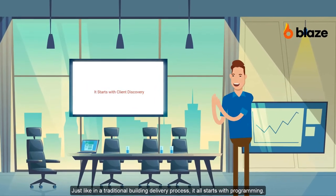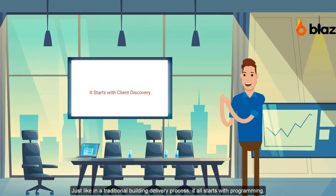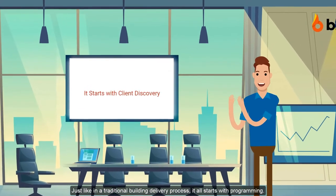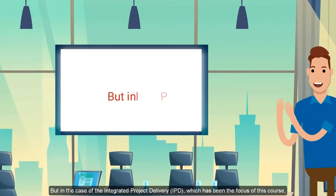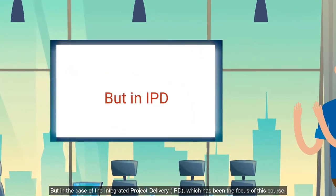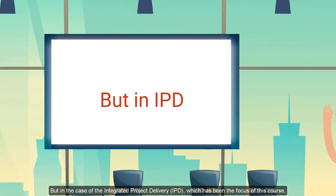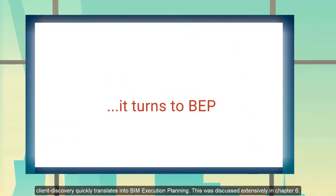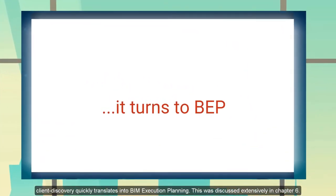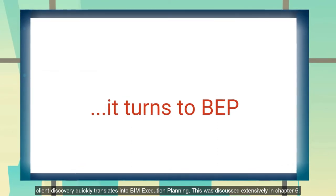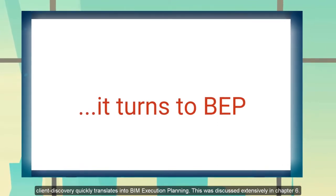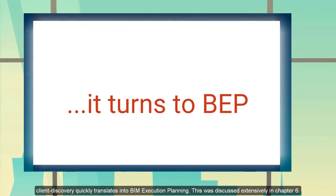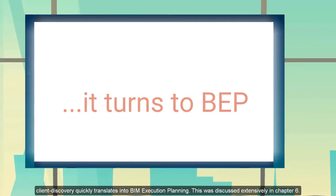So, just like the traditional building development process, it all starts with programming. But in the case of the integrated building, which has been the focus of this course so far, this plan is called the BIM Execution Plan, which we will discuss extensively in the sixth chapter of this course.